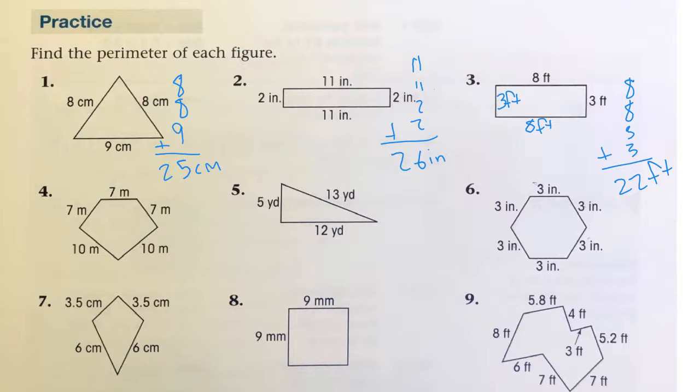That is the idea for each of the figures. You're going to add up all of the lengths. When you get all of the lengths added up, that sum is the perimeter. There's more practice for you to do in your workbook for Chapter 16, Section 6.